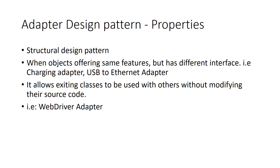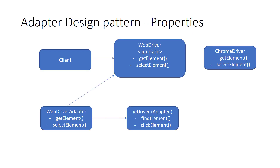One example is a WebDriver executor. This WebDriver interface has two functions: get element and select element. It assumes all web drivers support these. ChromeDriver supports get element and select element. But there's another object — IDriver, the Internet Explorer driver — which can do the same thing but with a different interface: find element instead of get element, and click element instead of select element.